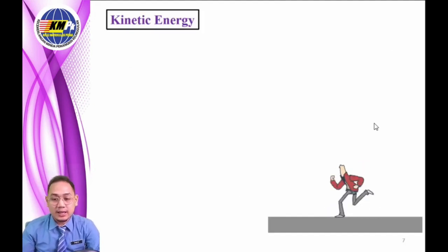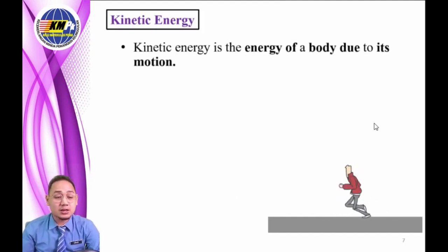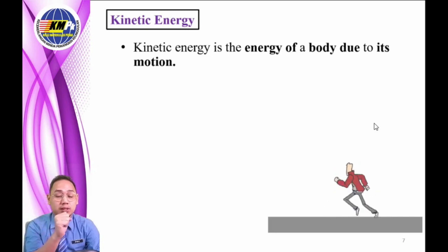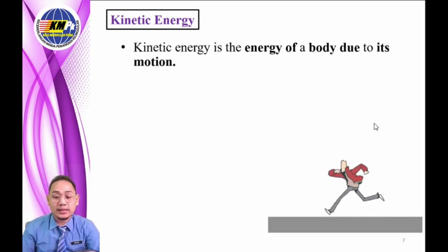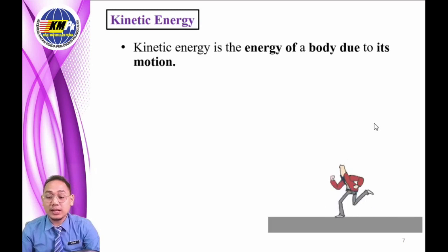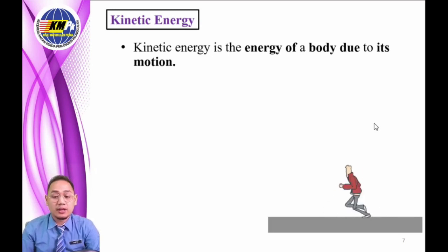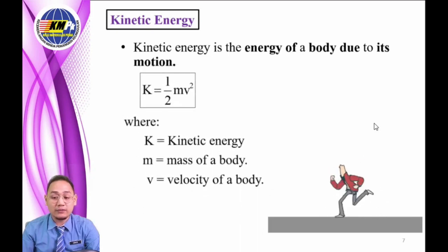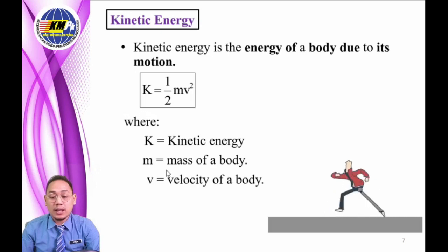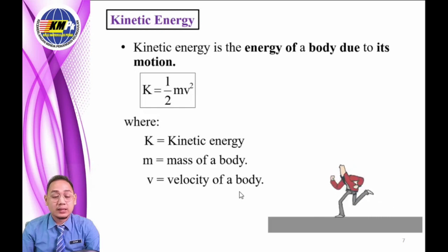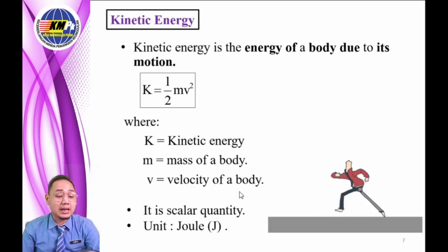Kinetic energy is the energy of a body due to its motion. Any object that has motion, whether vertical or horizontal, has kinetic energy. Therefore, kinetic energy can be calculated using the formula K = ½mv², where K is kinetic energy, m is the mass, and v is the velocity. Since it is a type of energy, it is a scalar quantity and has the unit of Joule.